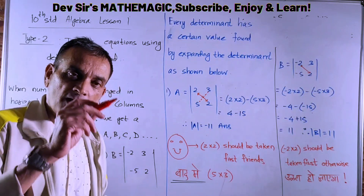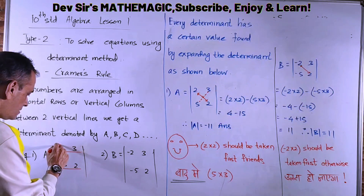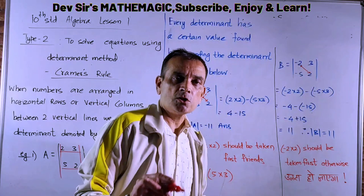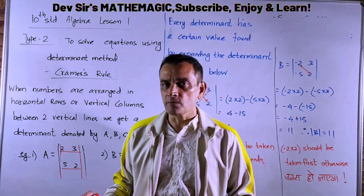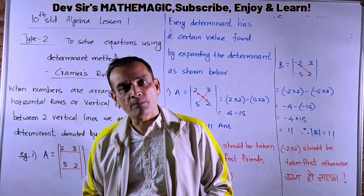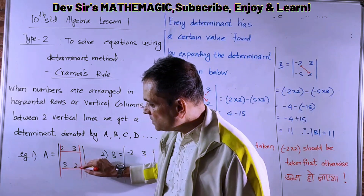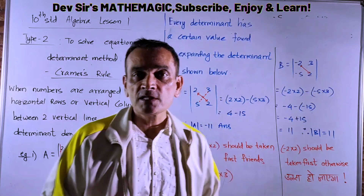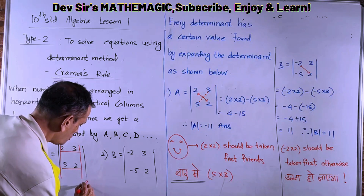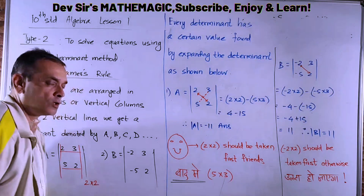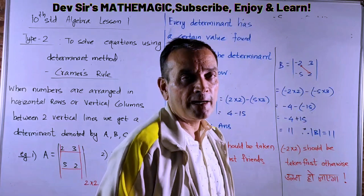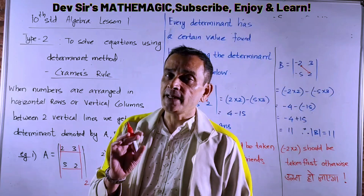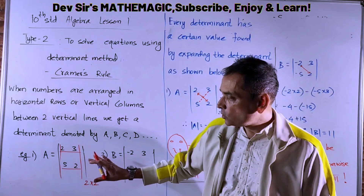Horizontal lines mean horizontal rows; vertical lines mean vertical columns. How many rows and columns are present here? Two rows and two columns. So the order of this determinant is two by two. In the 10th standard, you only have two by two determinants.